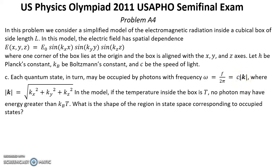where C is the speed of light and K is the length of vector K in this space. If the temperature inside the box is T, no photon may have energy greater than K_B T,